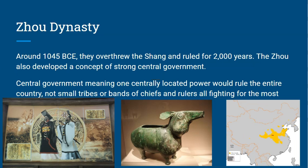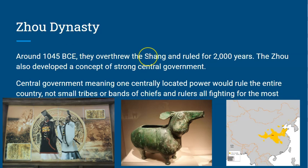Our next dynasty is the Zhou dynasty. They came around in 1045 BCE, overthrew the Shang dynasty, and ruled for 2,000 years. The Zhou also developed the concept of a strong central government — the idea that one centrally located power rules the entire country, rather than small tribes or bands of chiefs fighting each other.